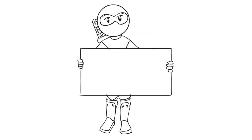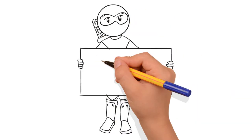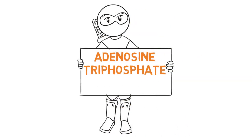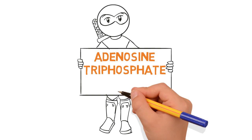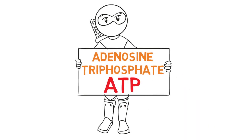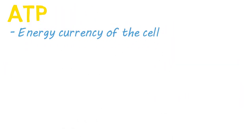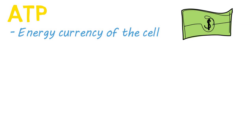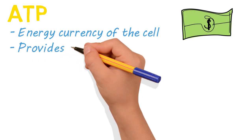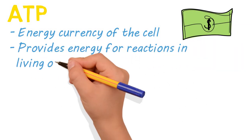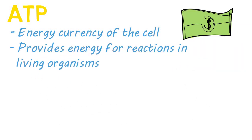Thanks for stopping by. Today we're going to talk about adenosine triphosphate, more commonly known as ATP. ATP is the energy currency of the cell — that is to say, it provides the energy for the vast majority of reactions that take place in living organisms.